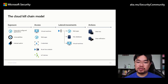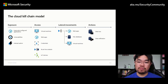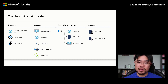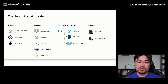The cloud kill chain model is a good reference to visualize how attackers can present a threat to an organization. The first phase is exposure, or opportunities to gain access to an organization's environment. Attackers often do so by exploiting vulnerabilities in customer-facing applications, and will then use this vulnerability to gain access to the organization's infrastructure — by attacking exposed systems, gaining access to credentials, or taking advantage of vulnerable devices.